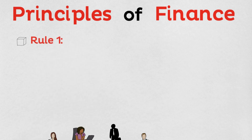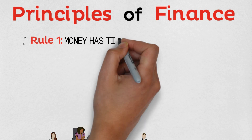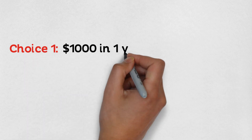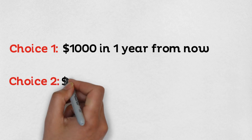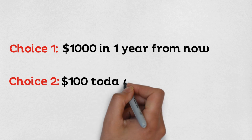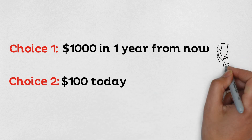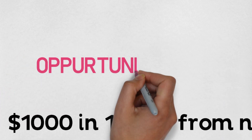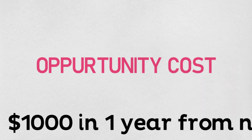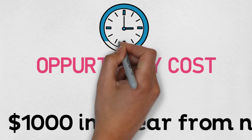Rule number one: money has time value. In simple terms, if I give you two choices — first, I'll give you $1,000 in a year from now, or second, I'll give you $100 today — think about it. Although $1,000 in two years is nice, there is something called opportunity cost that you'll be foregoing. Based on this principle, it's better to choose money now than money in the future. Remember this question as it shows up in a lot of test quizzes.